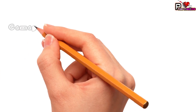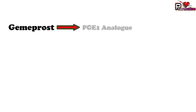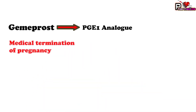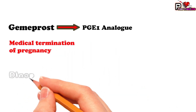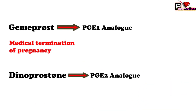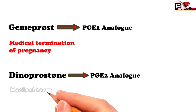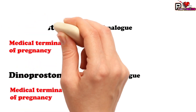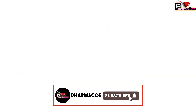The second drug is gemiprostol, also a PGE1 analog, used for uterine contraction and medical termination of pregnancy. The third one is dinoprostone, a PGE2 analog — prostaglandin E2 analog — which also increases uterine contraction and is used for medical termination of pregnancy.